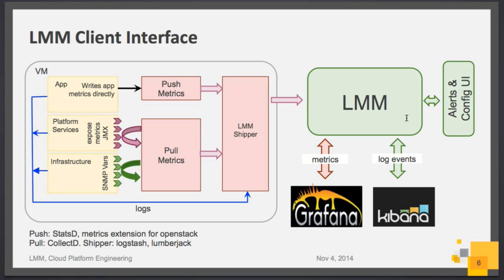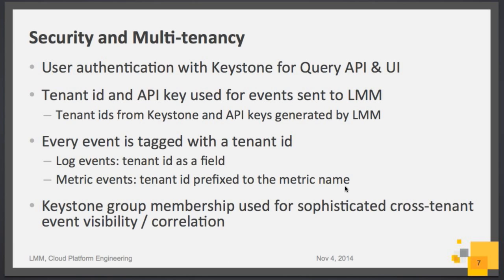Once the metrics are shipped to LMM, users can look at log events in Kibana, which provides a nice UI for searching indexed log events with timeline queries and many other features. Metrics can be visualized in Grafana, a tool similar to Kibana that allows correlation and visualization of metrics. If I had time I would have shown you demos — feel free to talk to me after this. There is also a UI that allows you to configure alerts and rules: for example, if CPU is above 90%, or if you find a particular fatal error in your log messages, you want an alert to be generated.